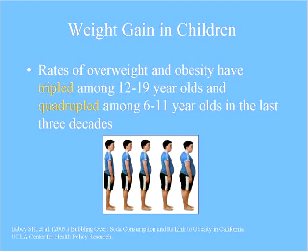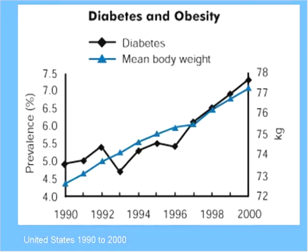Obesity raises our risk of high blood pressure, stroke, and a series of diseases, but one we worry about very much is diabetes. Tracking right along with the increase in average body weight, we've seen an increase in the prevalence of diabetes — particularly what we used to call adult onset diabetes and now call type 2 diabetes.